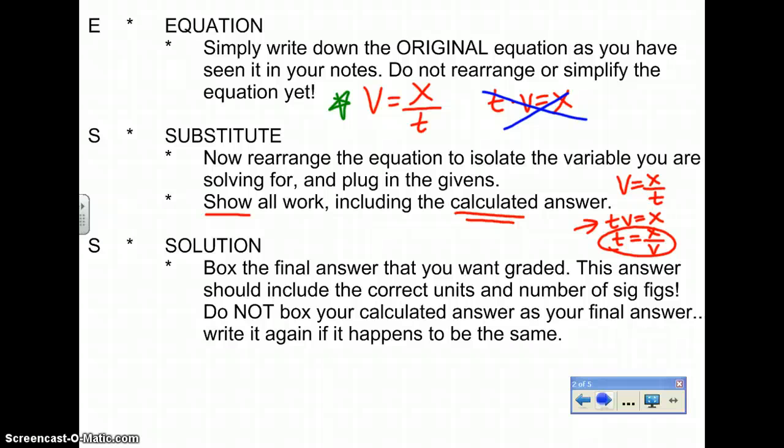Now you can move on to the solution. The solution is going to be what we will grade. If there is no boxed final answer, there is no final answer. So make sure that you box your final answer. For this final answer, make sure that it also has the correct units and the correct number of sig figs. You get your sig figs for your final answer by looking at your givens. The given with the least amount of sig figs is the number of sig figs that you want in your final answer.